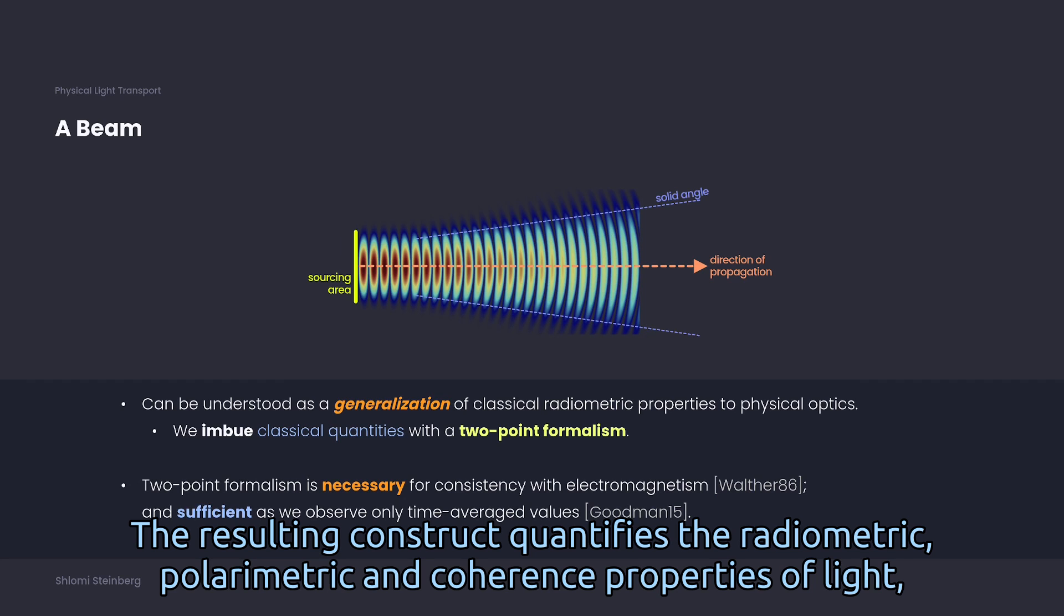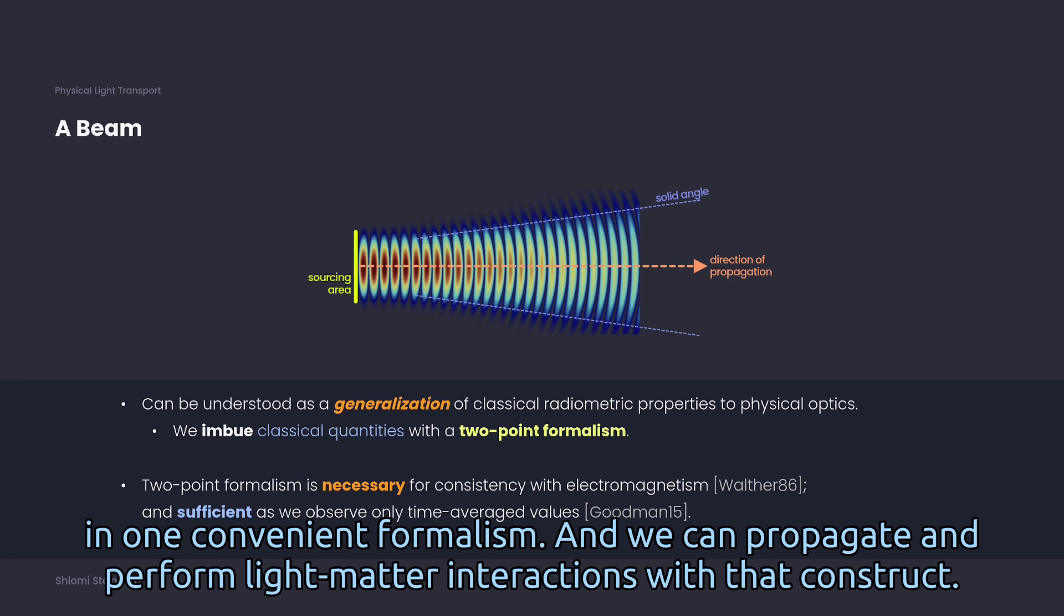The resulting construct quantifies the radiometric, polarimetric, and coherence properties of light in one convenient formalism.